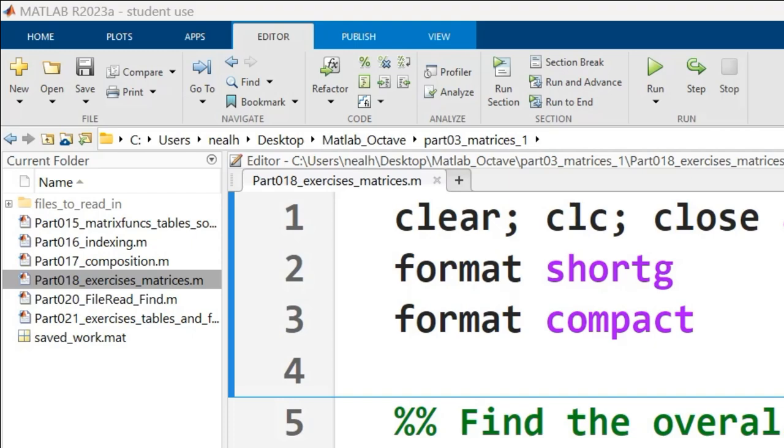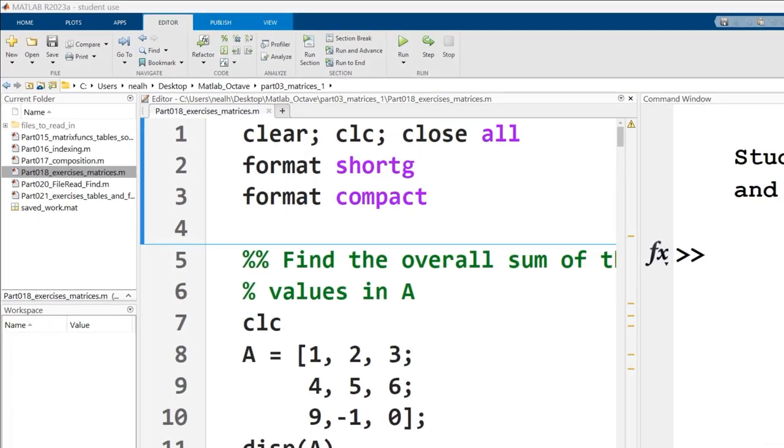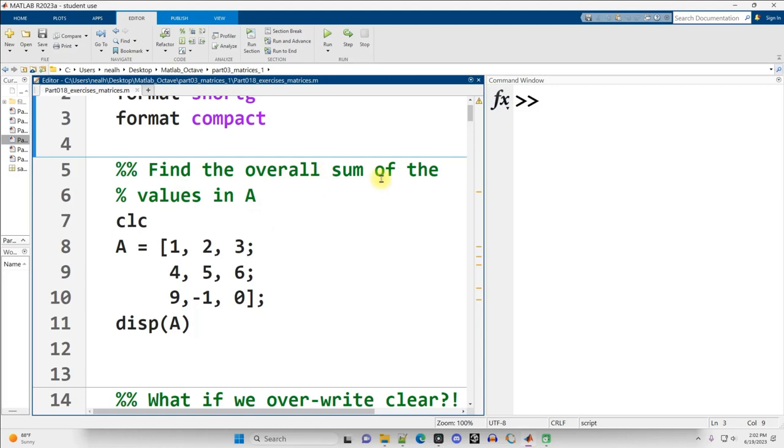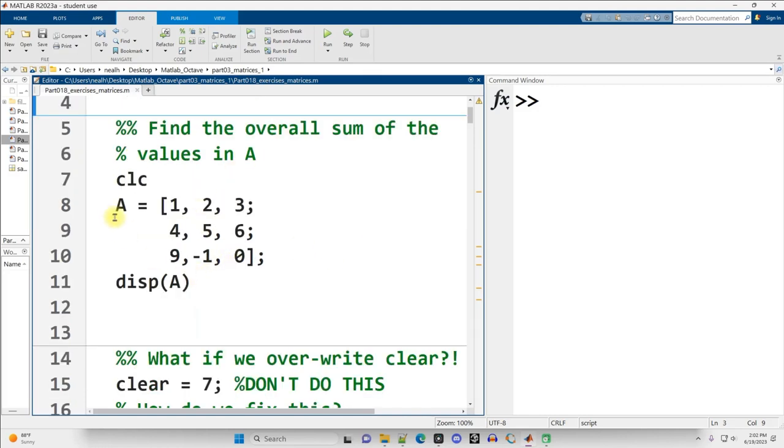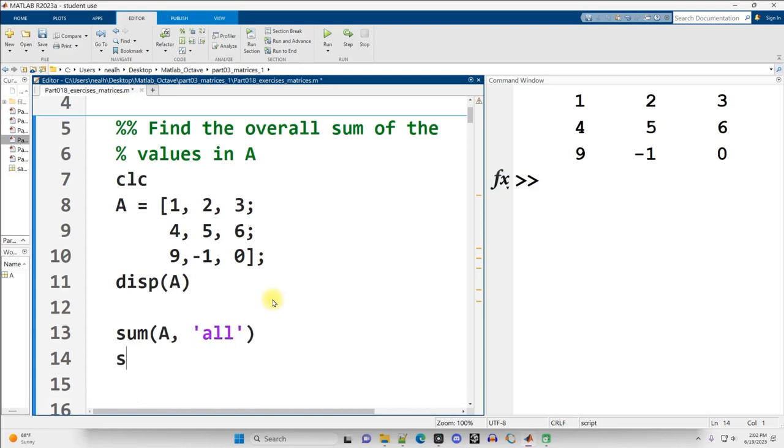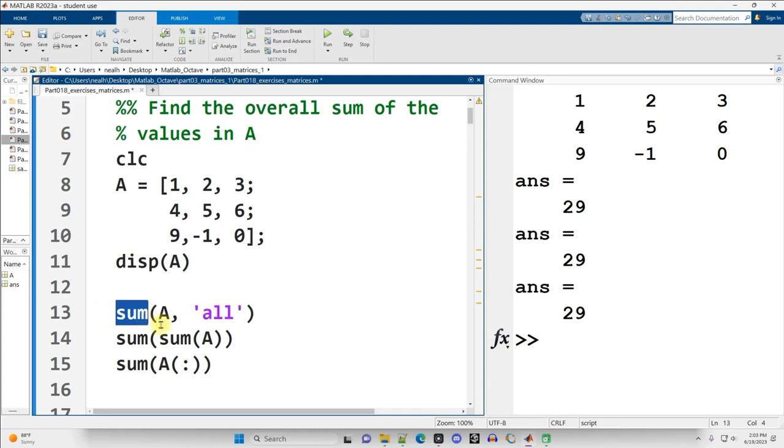You can find direct links to all these files in the video description. The first question is, find the overall sum of the values in matrix A right here. There's a variety of ways to do this. These are a few that I can think of off the top of my head. This first one is just the sum function of A with an extra input, all right here in quotation marks. I'm not 100% sure if this works in octave.